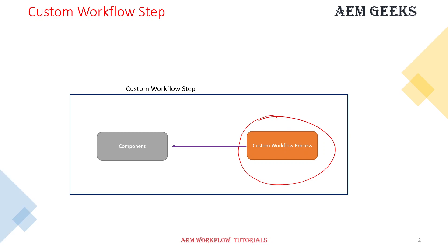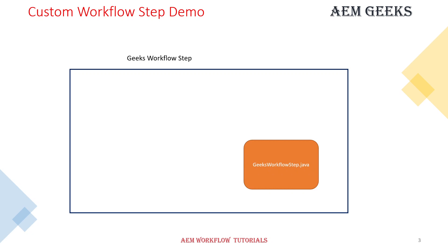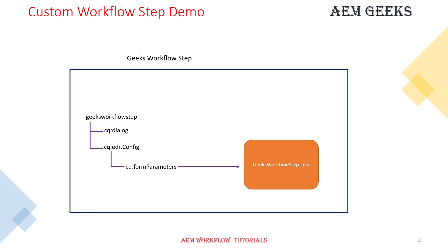A custom workflow process is an individual module — it does not need a custom workflow step to work and can be deployed individually to AEM. But a custom workflow step needs a process. I've written a custom workflow process called 'geeks workflow step' and a corresponding component. The component has no rendering scripts or Sling backend module — only a cq:dialog and an edit config node. Inside the edit config node, there is a cq:formParameters child node with a 'process' property where you map the custom workflow process to the component.